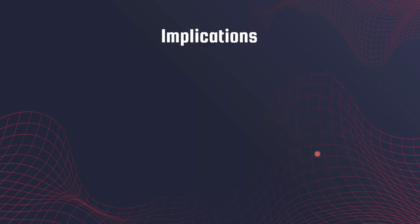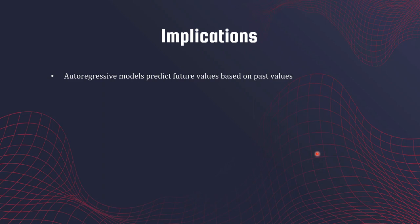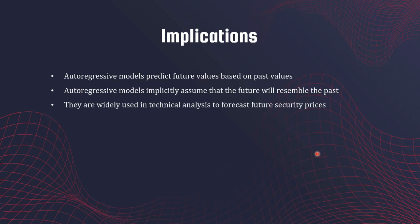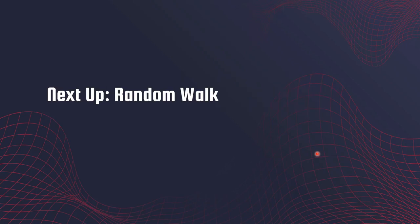Some implications of the autoregressive model: these models predict the future based on past values, which means they implicitly assume that the future will resemble the past. If you have reason to believe this is true, you can opt for an autoregressive model. They are widely used in technical analysis to forecast future security prices. If the future is not going to resemble the past, they won't work well. Another application is modeling house prices.